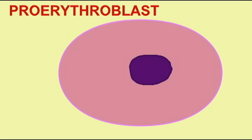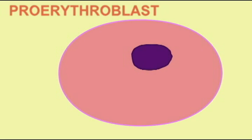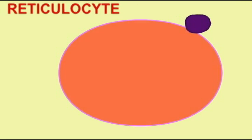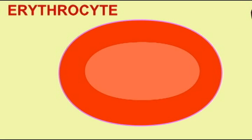During this process, the nucleus is ejected from the cell, and the cells become primarily filled with the protein hemoglobin, which will transport oxygen.